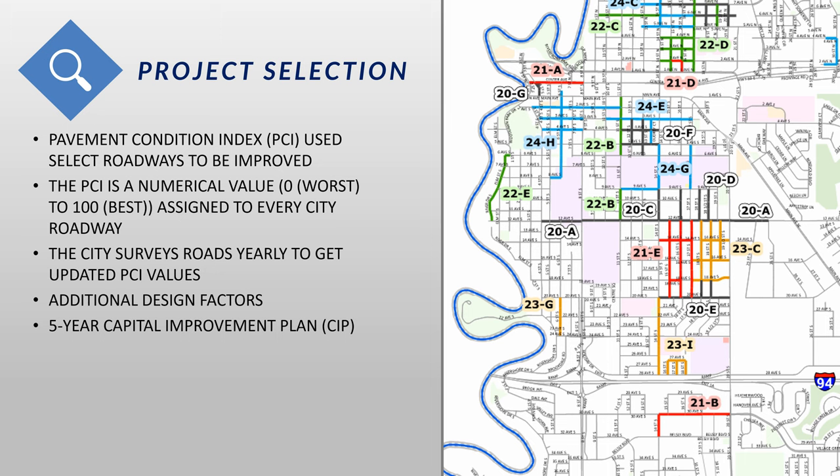The city hires a consultant to evaluate the condition of the road, and we feed that information into our pavement management software to help determine which projects to do based on our budget for the year. We also take into consideration additional factors including the age of the street, how it was constructed, whether any utility repairs are needed on the sanitary sewer or storm sewer, and whether our street work can be coordinated with other utility companies such as MPS and Xcel.